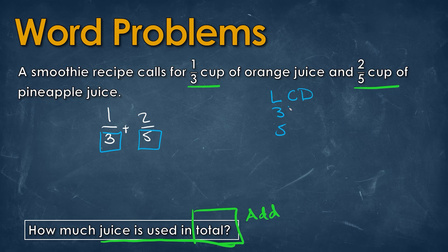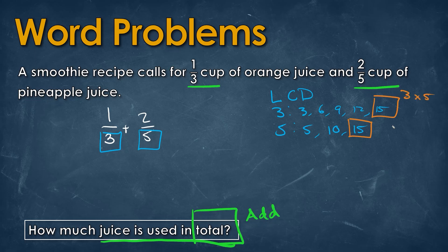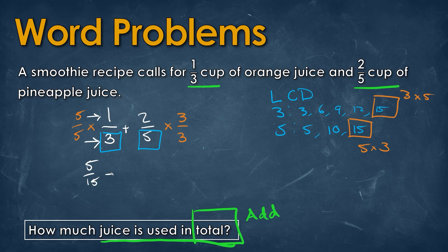We look at multiples of 3 and multiples of 5. For 3: 3, 6, 9, 12, 15. For 5: 5, 10, 15. We see 15 appears in both lists, so we multiply 3 by 5 to get 15 and 5 by 3 to get 15. We multiply the left fraction by 5 on top and bottom and the right fraction by 3 on top and bottom. Multiplying straight across gives us 5 over 15 for the first fraction and 6 over 15 for the second.